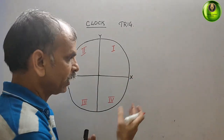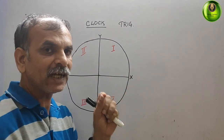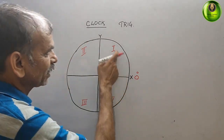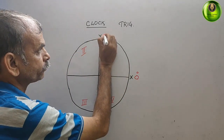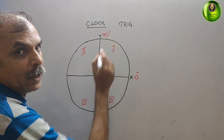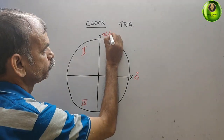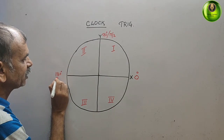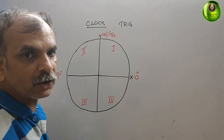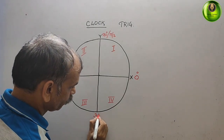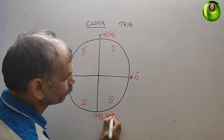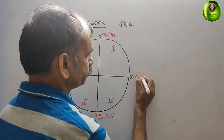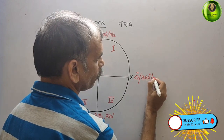This is your east, and east will start with your zero degree. So zero degree comes here towards the east. This is your 90 degree, or we can say it's pi by 2. This is your 180 degree, or we can say it's pi. This is your 3 pi by 2, or we can say it's 270 degree. This again is 0 degree, or we can say it's 360 degree, or 2 pi.